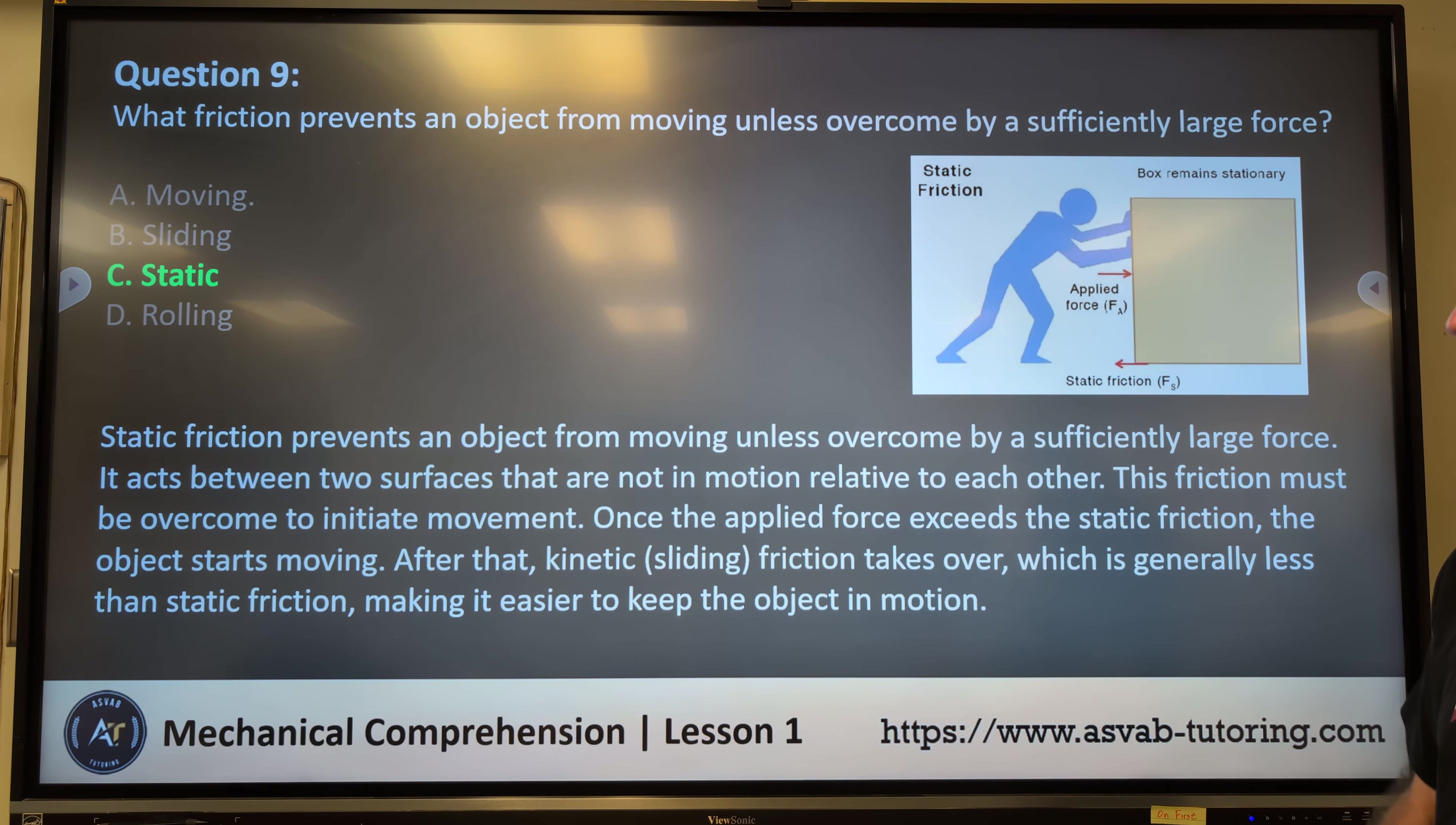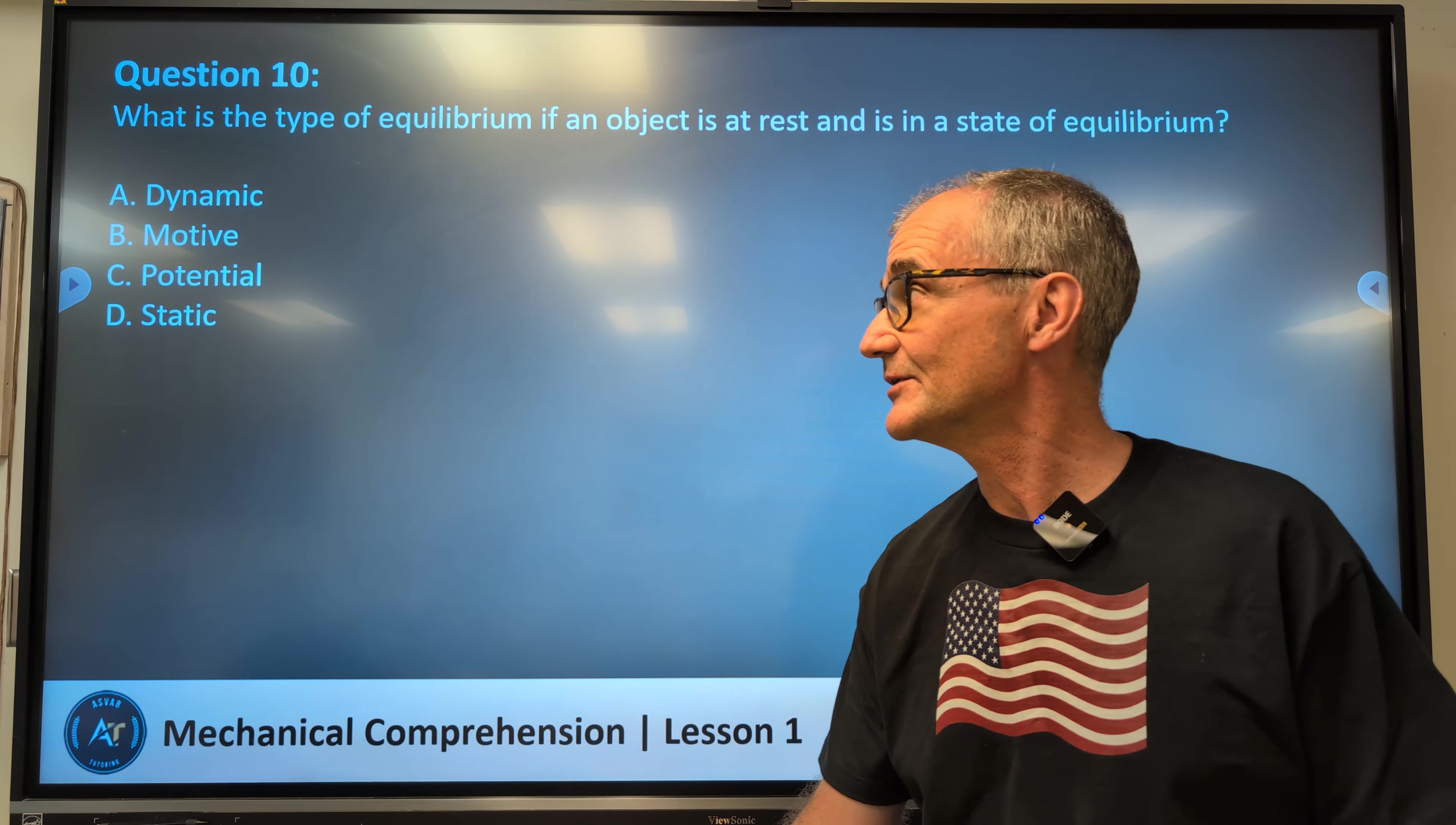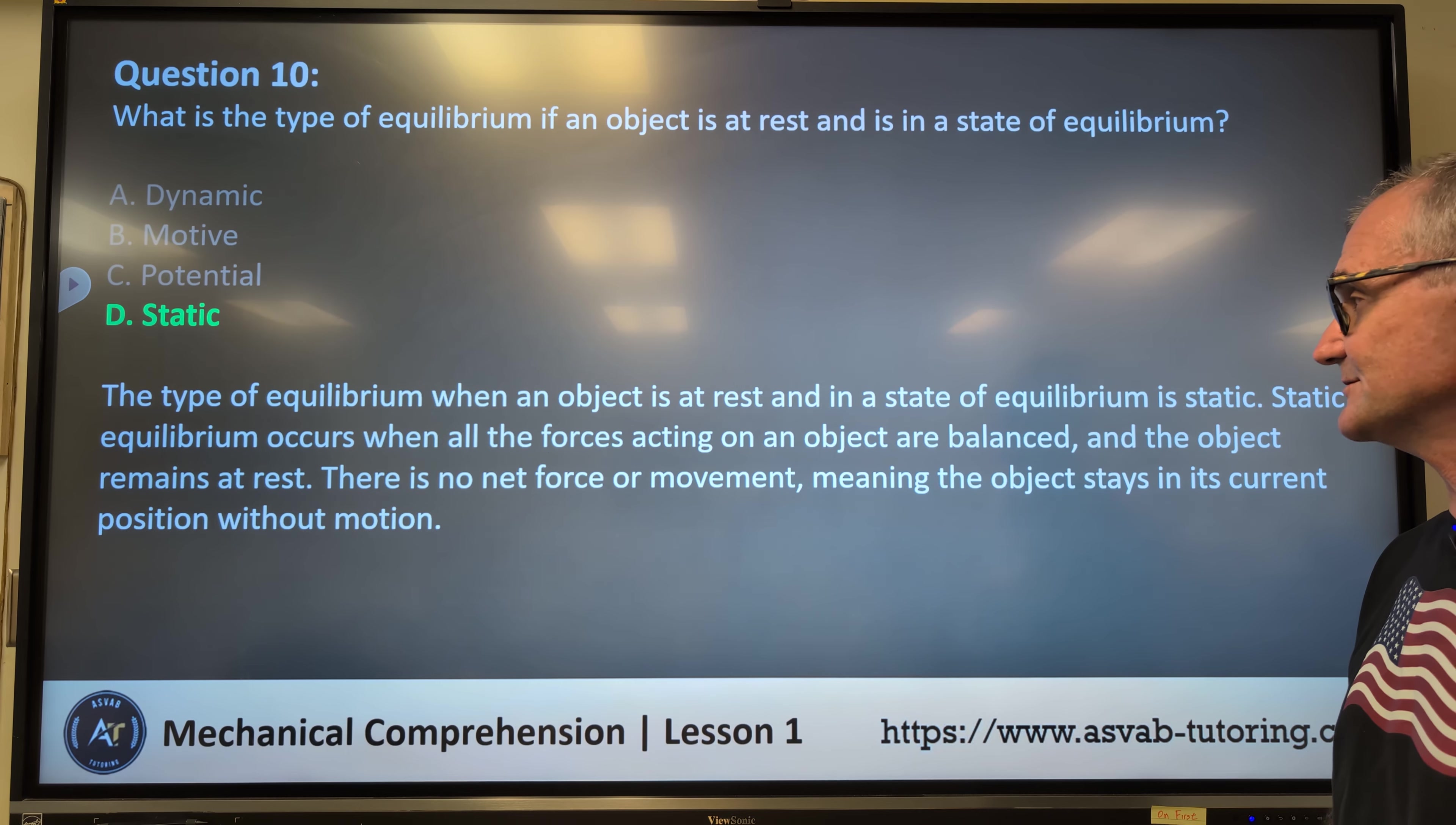Question number 10. What is the type of equilibrium if an object is at rest and is in a state of equilibrium? A, dynamic, B, motive, C, potential, or D, static. Pause the video. Do the best you can. Unpause. Correct answer is D, static. The type of equilibrium when an object is at rest and in a state of equilibrium is static. Static equilibrium occurs when all the forces acting on an object are balanced.